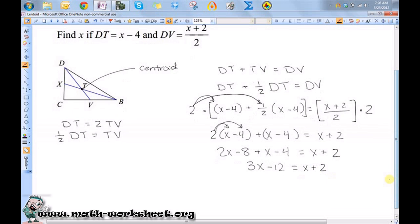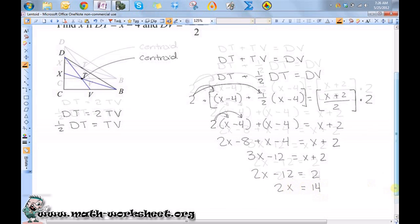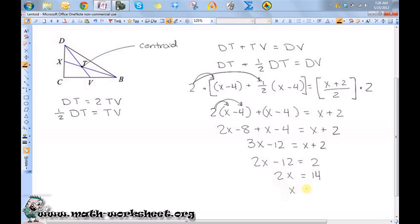Let's subtract x from both sides, giving me 2x minus 12 equals 2. Now let's add 12 to both sides, so I get 2x is equal to 14. And if I divide both sides by 2, I will get x is equal to 7.